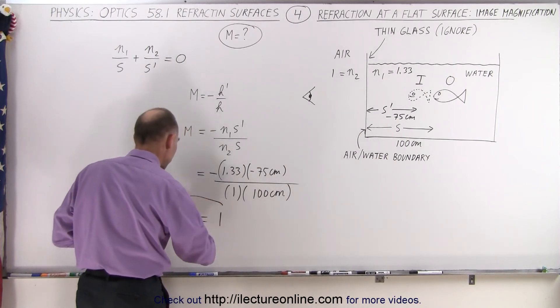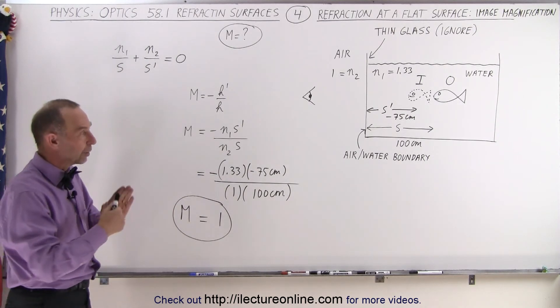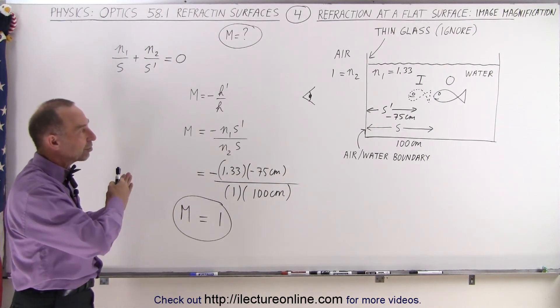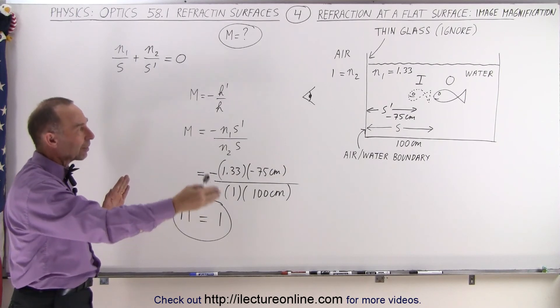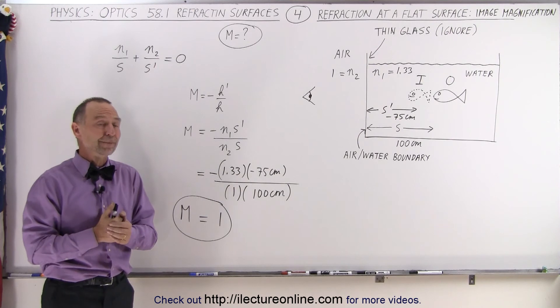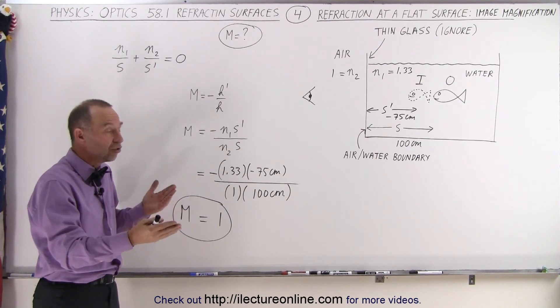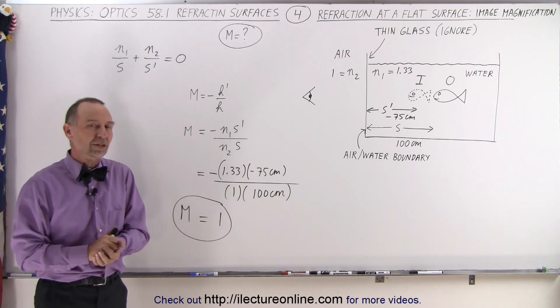So you can see here that the magnification across a flat boundary, where the image is caused by the refraction of the light coming from one side of the boundary to the other side of the boundary, notice the magnification is equal to 1. It turns out that the change in the index of refraction cancels out the change in the image distance relative to the object distance.